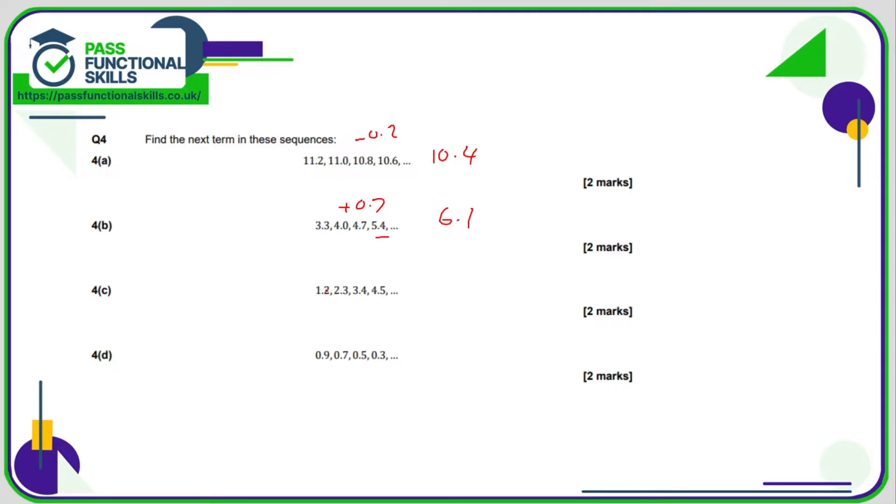4c: 1.2, 2.3, 3.4, 4.5, we're adding 1.1, and if we add 1.1 to 4.5, we're going to get 5.6.